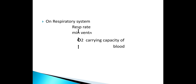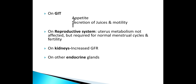On the respiratory system, it increases the respiratory rate, minute ventilation, and also increases oxygen-carrying capacity of the blood. On GIT, it increases appetite, secretion of digestive juice, and motility. On the reproductive system, the uterus metabolism is not affected, but thyroid hormone is required for normal menstrual cycles and fertility; it maintains the normal ovarian cycle in females, spermatogenesis in males, and libido. On kidneys, it increases the glomerular filtration rate. In the CVS, along with catecholamines like adrenaline and noradrenaline, it potentiates the action of thyroid hormone — called permissive action.